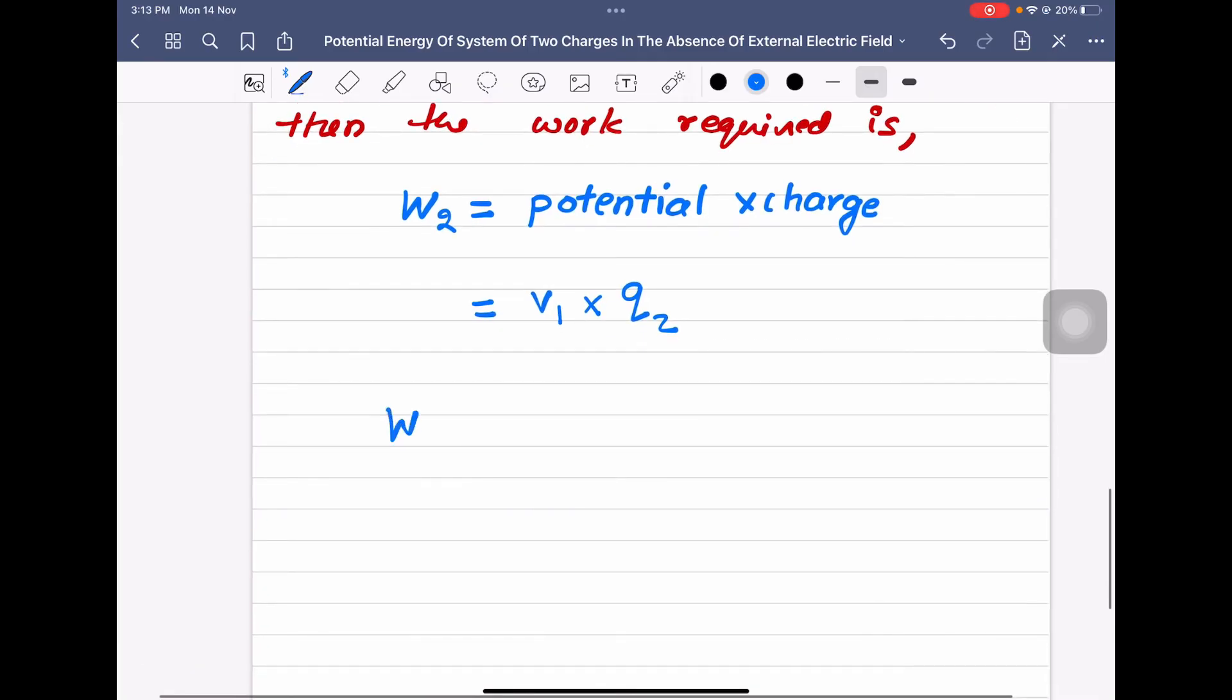Therefore, W2 is equal to V1, V1 means 1 by 4π epsilon 0 into Q1 Q2 divided by R12.